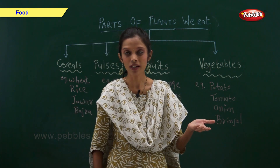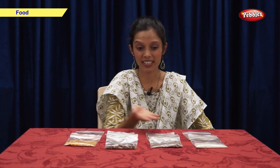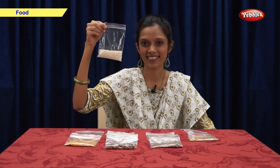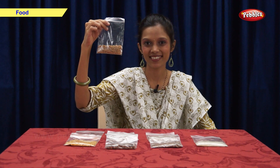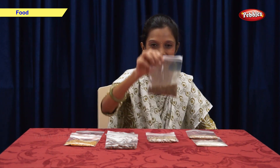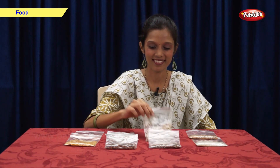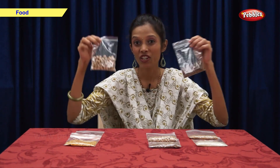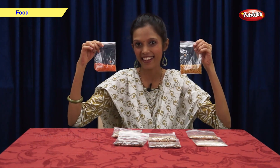Now, let us take a look at some more examples of each. Let us see some examples of cereals and pulses: rice, wheat, moong, beans, chana, banana, and dal.